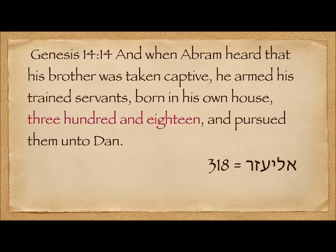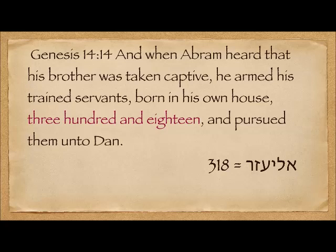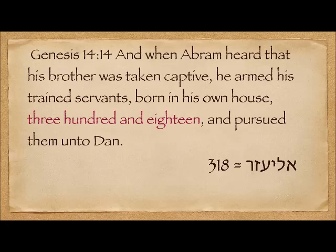A classic example people give is Genesis 14:14. When Abraham heard that his servant was taken captive, he armed his trained servants, born in his own house — 318 — and pursued them unto Dan. It seems like a random number, but there's no wasted information in the Bible. The gematria for Eliezer's name is 318. Eliezer of Damascus was the chief servant of Abram's house, so the rabbis conclude that only Abraham and Eliezer went out after the kings that took Lot captive.